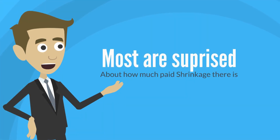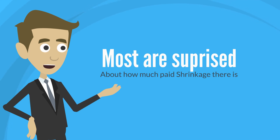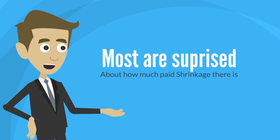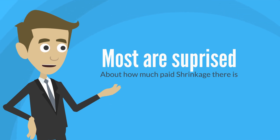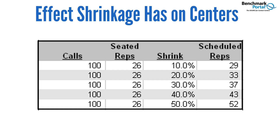People who are new to contact centers and workforce management are often surprised by the level of overall paid shrinkage that exists in their centers and how the percentage of projected shrink impacts the number of scheduled reps or agents they need. This table illustrates the dramatic effect that 10% increments of shrinkage have on centers. Note that even though each line represents the same workload, as shrinkage increases, more agents must be scheduled to net 26 available reps.